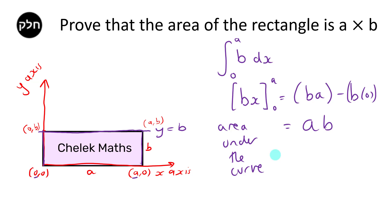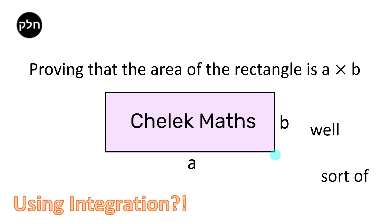Now, that is neat but it is a bit cheeky, because when we do integration we are basically using the fact that the area of rectangles is base times height to even do integration in the first place. So really we are using the fact that the area of a rectangle is A times B to prove that the area of a rectangle is A times B. So we've kind of proved it — well, sort of.